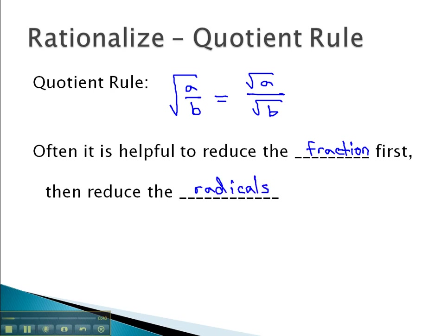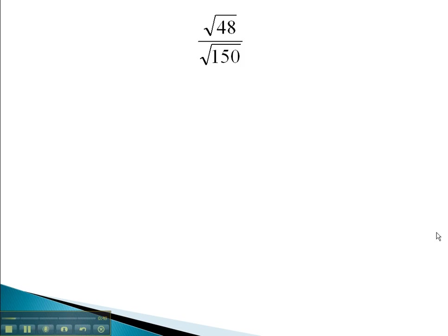Let's take a look at some examples where we reduce these expressions. Here we've got two square roots. However, because we've got the same square root in the numerator and denominator, we can treat that as one square root over the entire thing: the square root of 48 over 150.